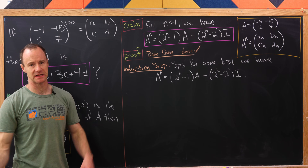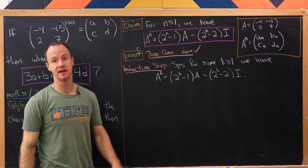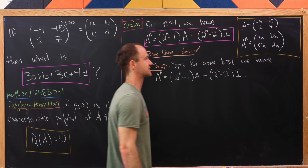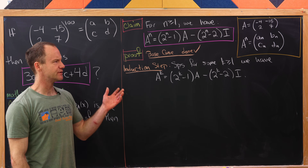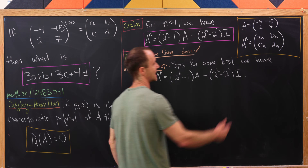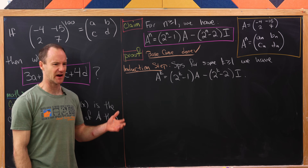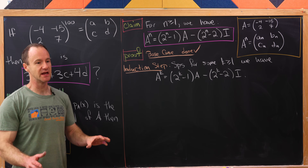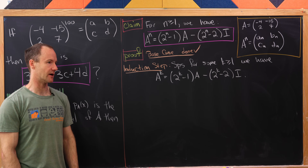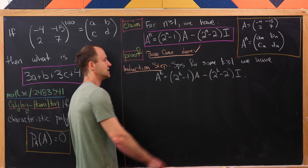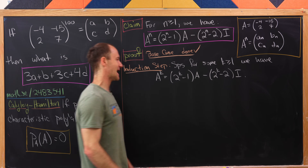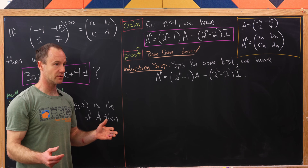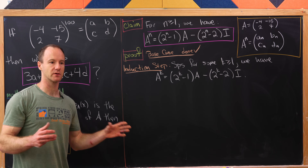We want to prove: for all n ≥ 1, A to the n equals 2^(n-1) times A minus 2^(n-2) times I. Recall A equals [-4, -15; 2, 7] and A^n equals [A_n, B_n, C_n, D_n]. We'll prove this by induction. Our base case was already verified, and we make the induction hypothesis that for some k ≥ 1, A to the k equals 2^(k-1) A minus 2^(k-2) I.